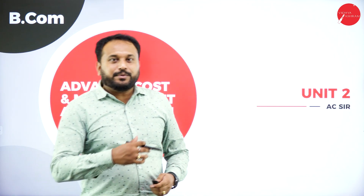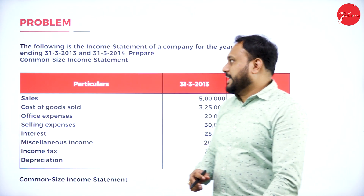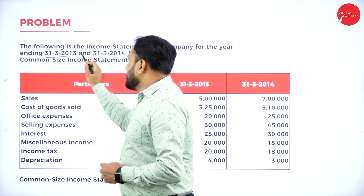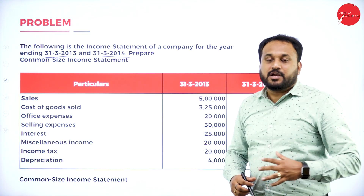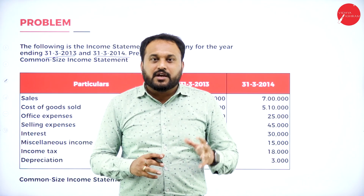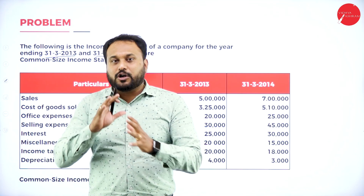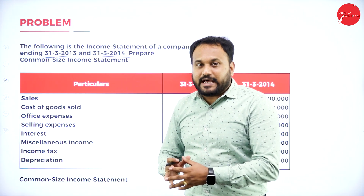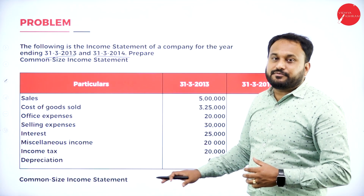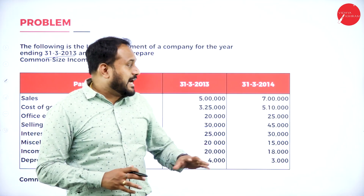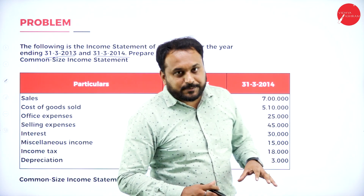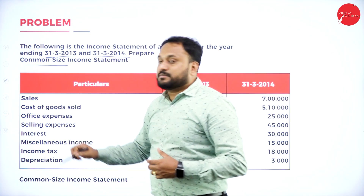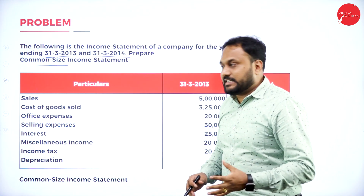The first question in the Analysis of Financial Statements goes like this: the following is the income statement of a company for the year ending 31-3-2013 and 31-3-2014 — prepare a common size income statement. You may have a confusion since we've done equity, liabilities, share capital, and shareholders' fund for the balance sheet. The income statement format is totally different. They will always give common size income statement — never comparative or trend income statement.